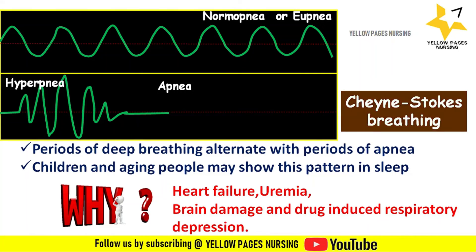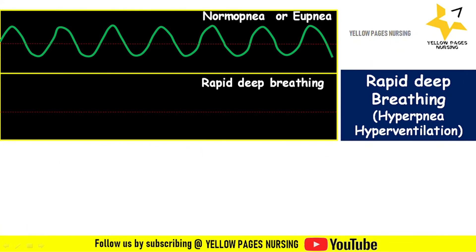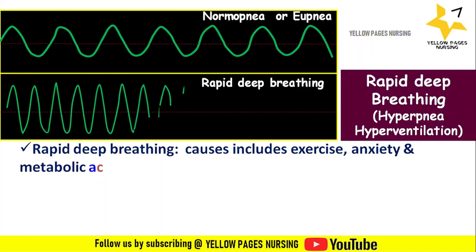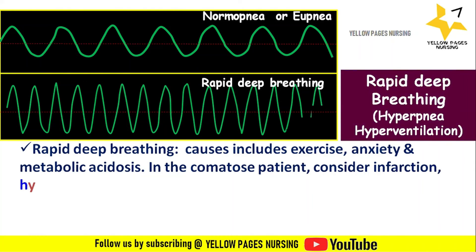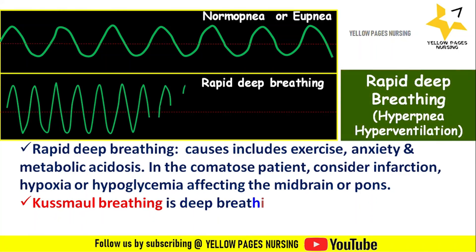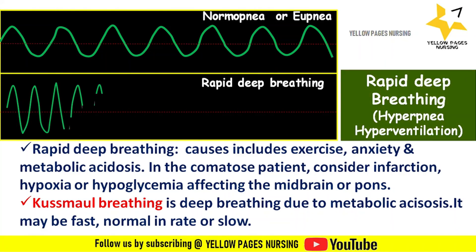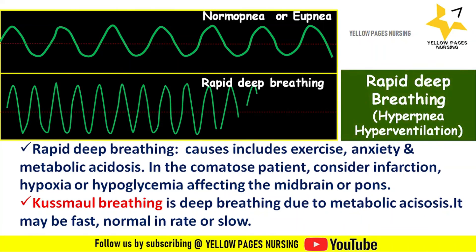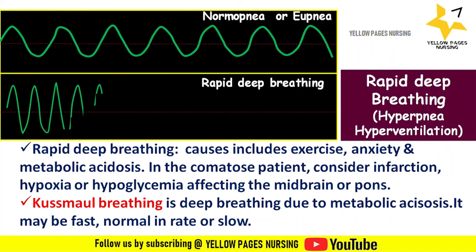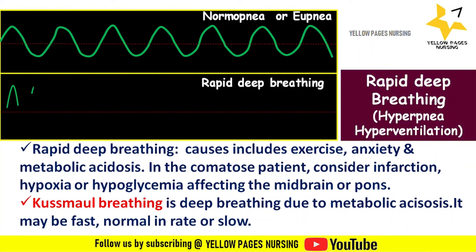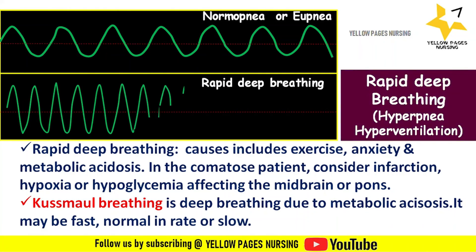Next comes rapid deep breathing — hyperpnea or hyperventilation. Causes include exercise, anxiety, and metabolic acidosis. In the comatose patient, consider infarction, hypoxia, or hyperglycemia affecting the midbrain or pons. Kussmaul breathing is deep breathing due to metabolic acidosis and may be fast, normal in rate, or slow.